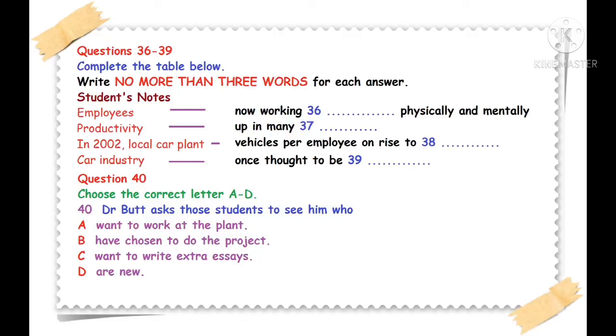It's interesting to note that productivity has gone up in many areas of industry. In 2001, the local car plant had one of the sharpest increases in average productivity, with the number of vehicles per employee rising by over 30% a year. A new assembly line came into operation at the beginning of 2002, affecting productivity, which increased to the 100 vehicles per worker mark by the end of the year. This is a stunning achievement for an industry which was not long ago considered to be collapsing. It would be interesting to do a survey of the work life at the plant. Those of you who have opted to do the project and reduce the number of essays you have to do may want to look into this. Please see me at the end of the lecture. Right now, let us move on to something else.